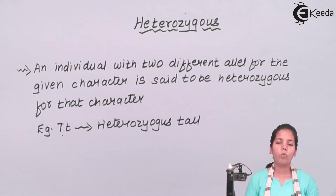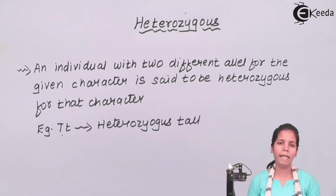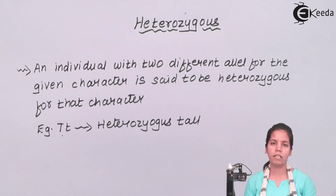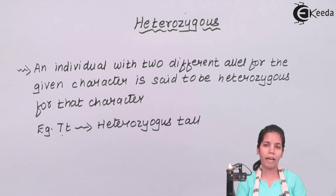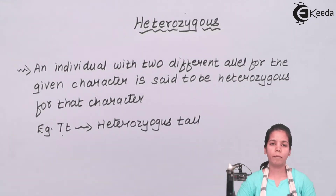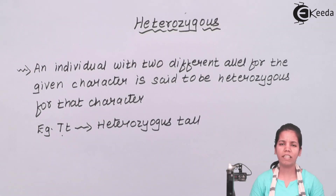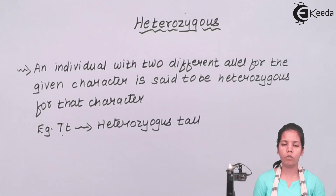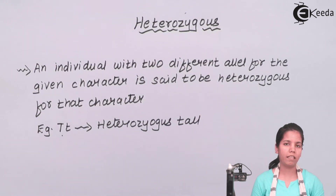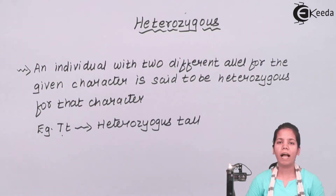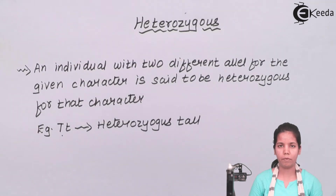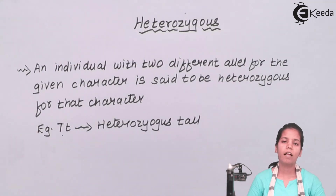This was one of the definitions widely observed in Mendelian genetics. Heterozygous, homozygous, phenotype, genotype, hybrids, and progeny — they were all linked, and all the laws of dominance use these words very thoroughly and very often. I hope you all are clear with this concept of heterozygous.